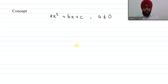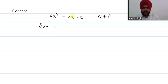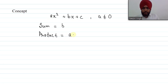The first thing is the sum and product of factors. The sum of factors is equal to the coefficient of x, that is equal to B. And the product of factors is equal to the product of the leading coefficient A and the constant term C. So the product of both factors equals A times C.